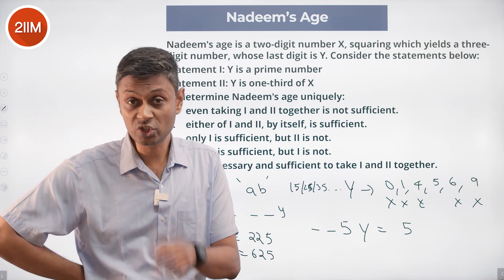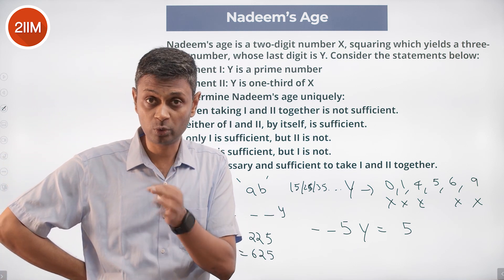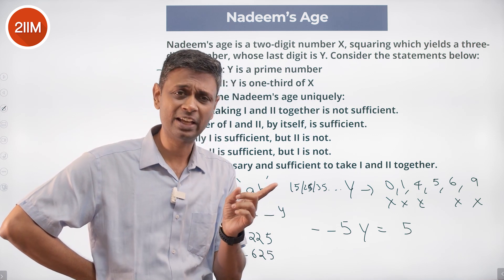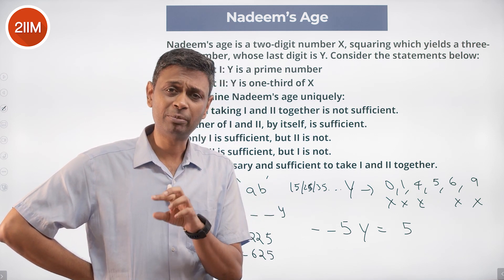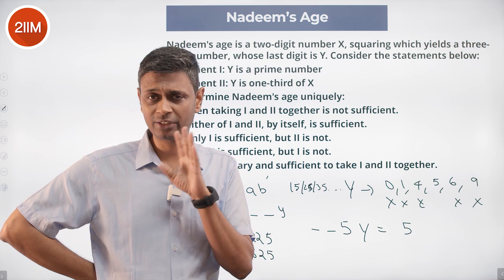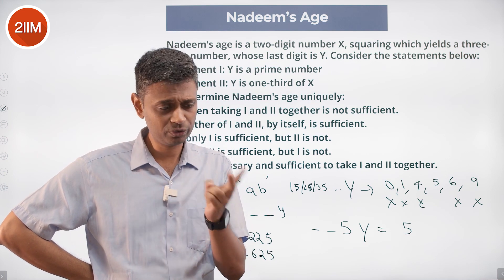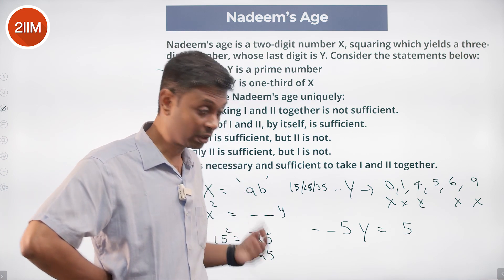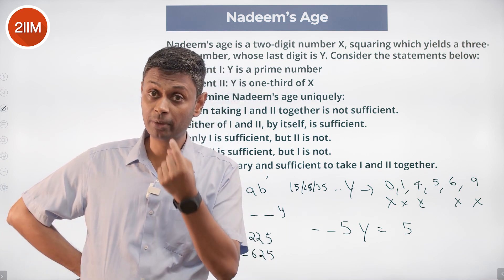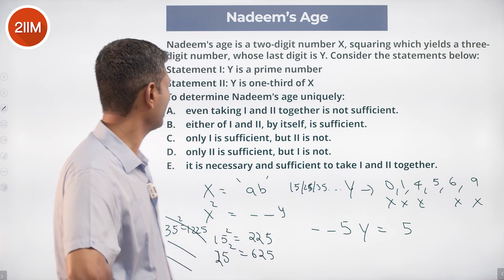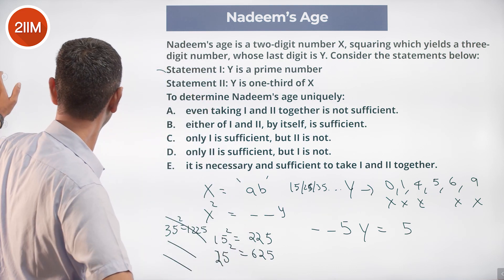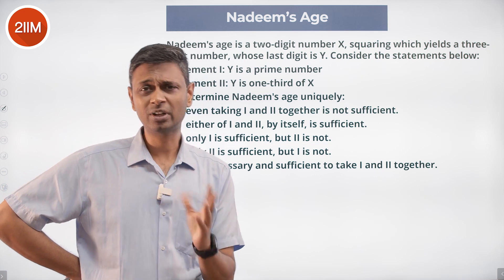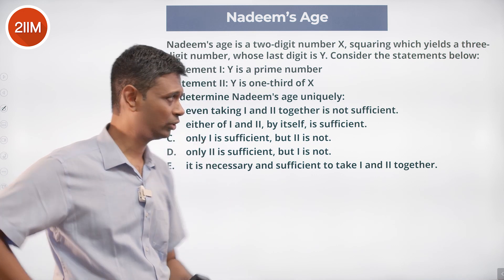Both 15 and 25 work — 15²=225 and 25²=625, both three-digit numbers ending in 5. Y is prime so Y can only be 5, X ends in 5, meaning X could be 15 or 25. Statement 1 alone is not sufficient — very interesting and useful, but no definitive answer yet.